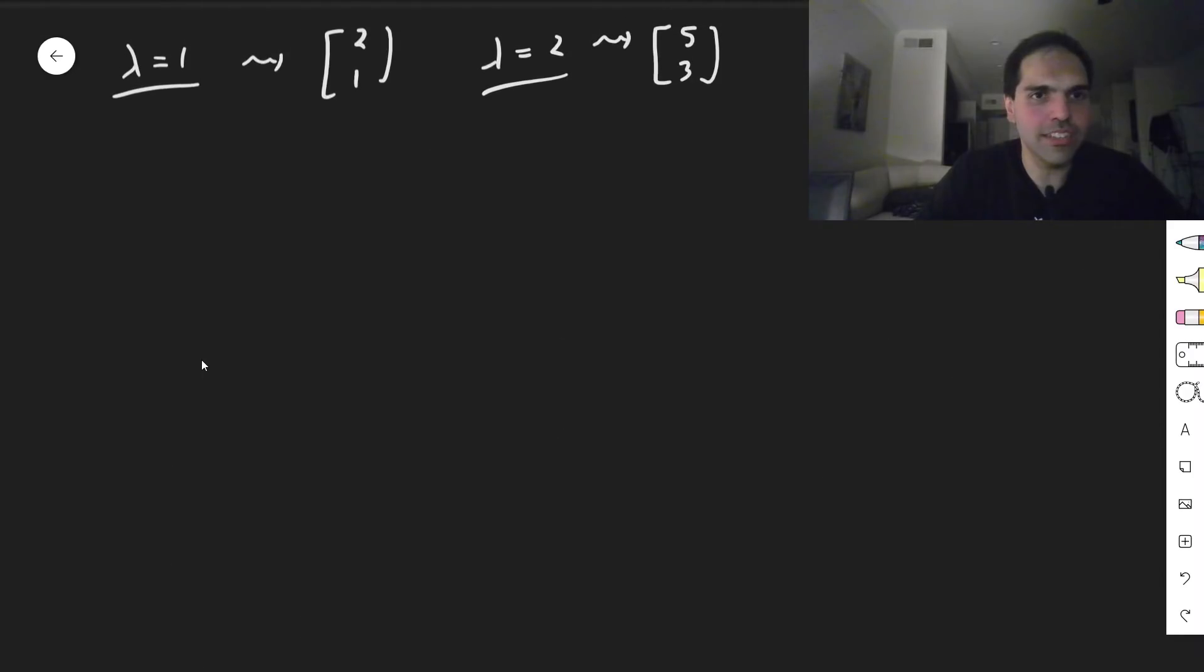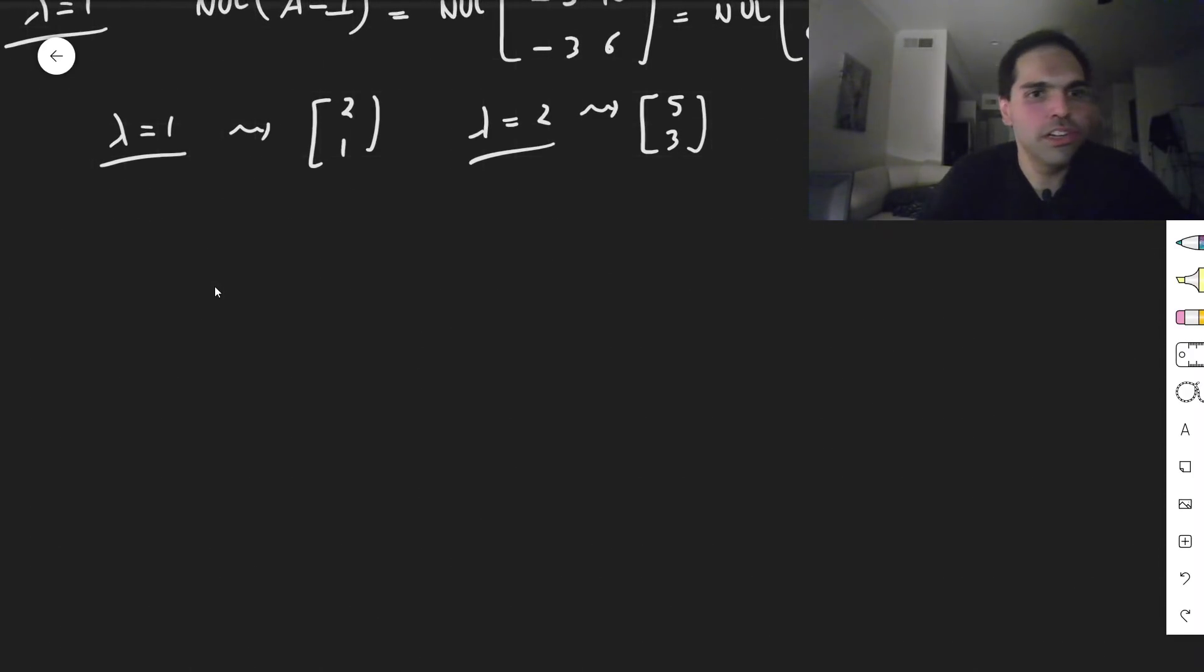So we have that this matrix then, that we want to i-th power it, equals minus 4, 10, minus 3, 7.